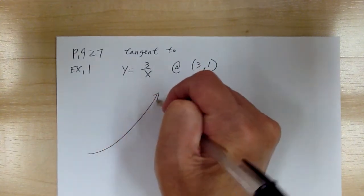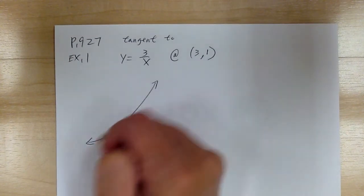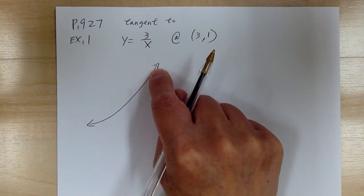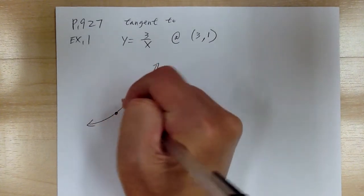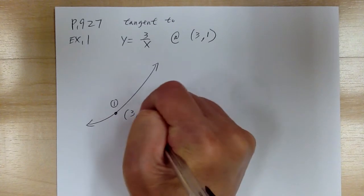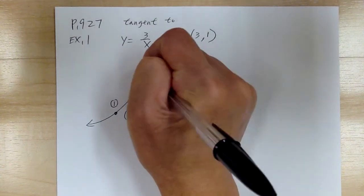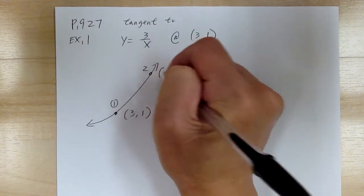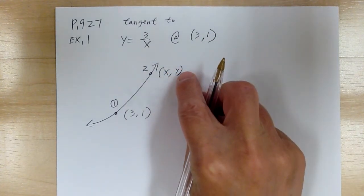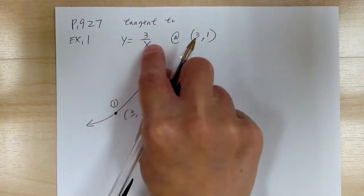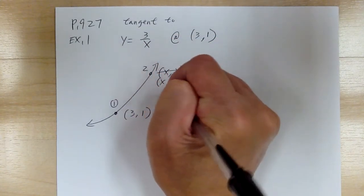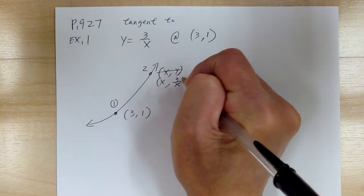You start with just a graph. It doesn't matter what it looks like; just draw something so you can visualize. Here's your point 1, which is (3, 1). Here's your point 2, so it would be x and y. You know what y is — it tells you y is 3 over x — so update that to x and 3 over x.